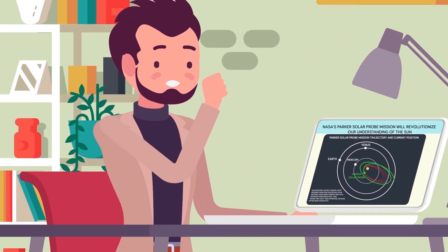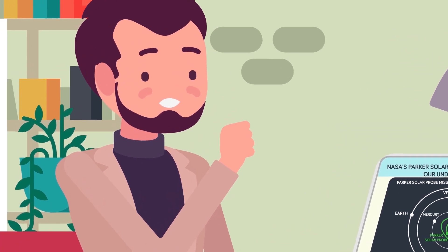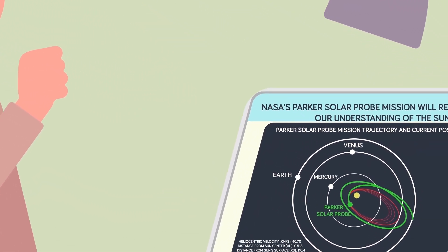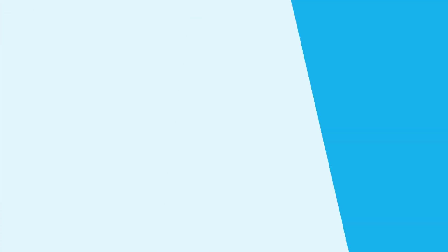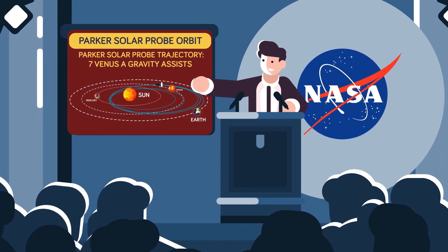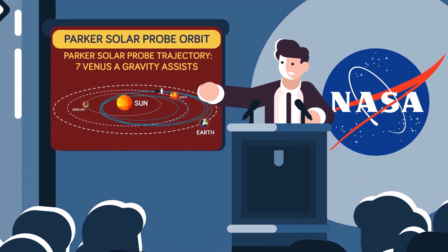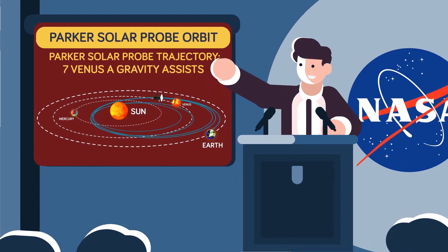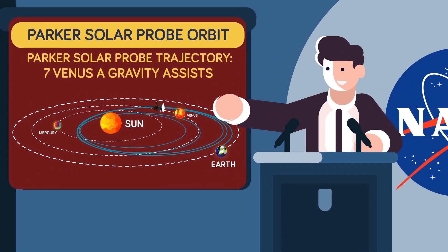So this theoretical probe traveling to the sun has to make its way to the center of the solar system while also shedding as much sideways speed from the Earth's orbit as possible. The solution NASA came up with for the sun-bound Parker Solar Probe was using Venus as a gravity assist.